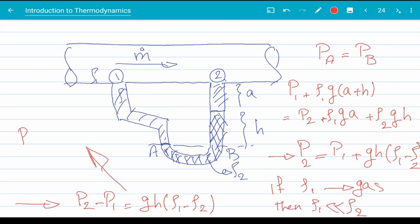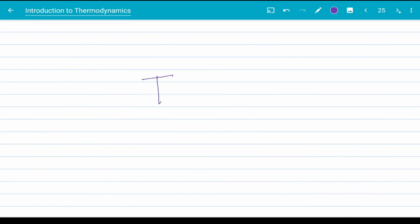In the case that the flowing fluid is gas and its density is way smaller than the density of a liquid, then we can neglect it with respect to the density of the liquid and reduce the equation even further to p2 minus p1 is minus rho 2 gh. Thank you for sticking around to the end of this video.